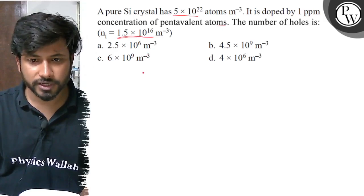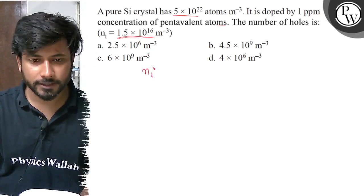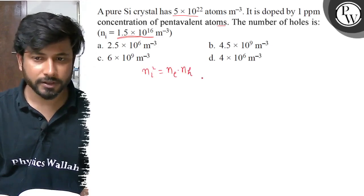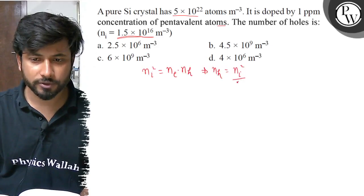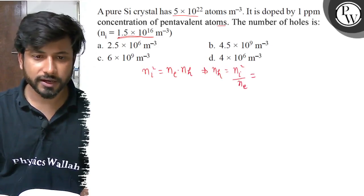This is all putting it here. Then nₑ × nₕ equals nᵢ². But at the same time, the number of holes is nₕ = nᵢ² divided by nₑ. So the number of holes is supposed to be nᵢ² upon nₑ.